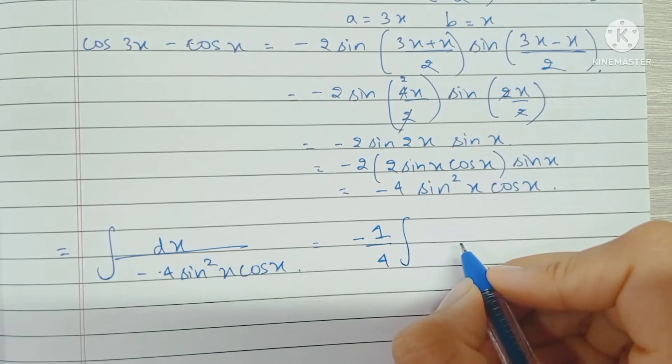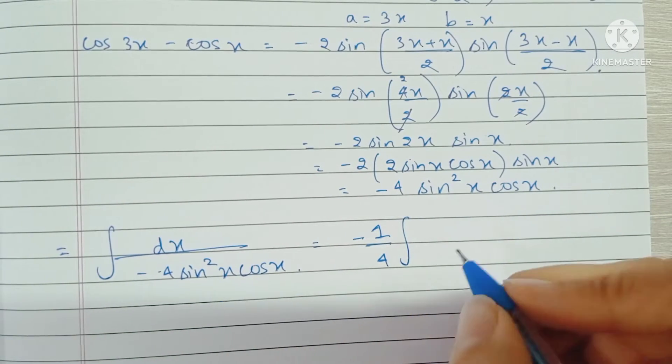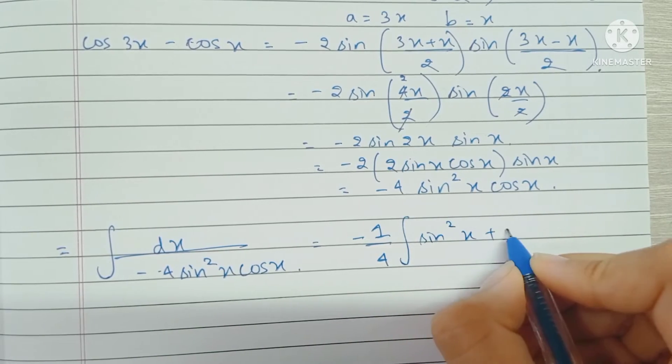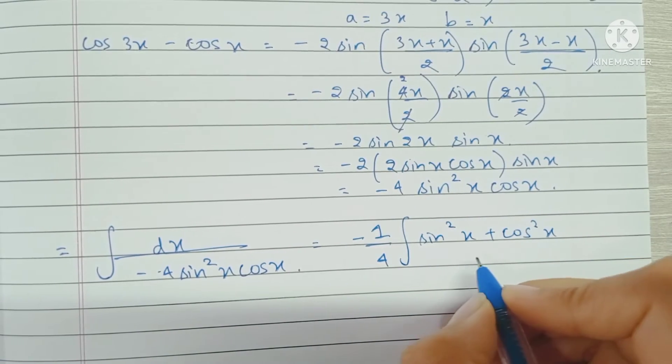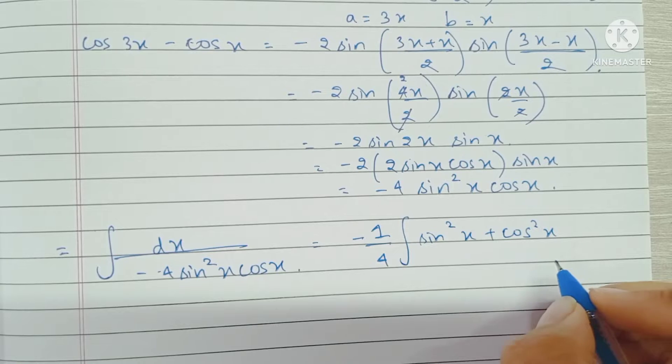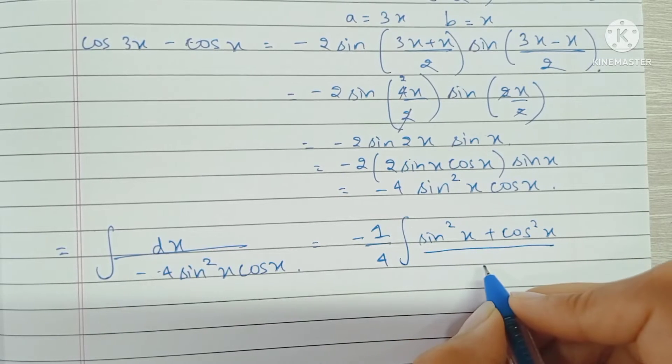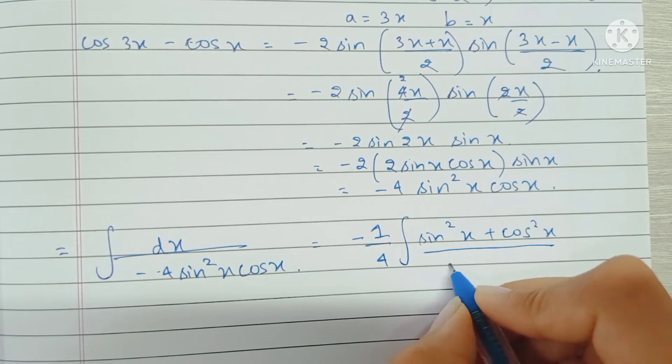In the integral, in the numerator, instead of 1, I can substitute sine squared x plus cos squared x, because sine squared x plus cos squared x is 1. So we have sine squared x plus cos squared x in the denominator, sine squared x cos x dx.